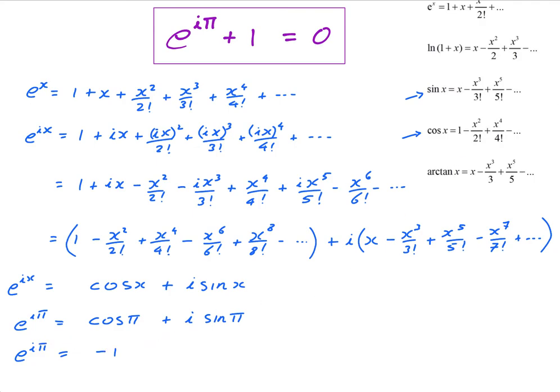Or, let me change the colour here. Make a big deal out of this. e to the i pi equals negative 1. Or, e to the i pi plus 1 equals 0. How neat is that, right? So, that's... Yeah, there we are. That's Euler's identity.